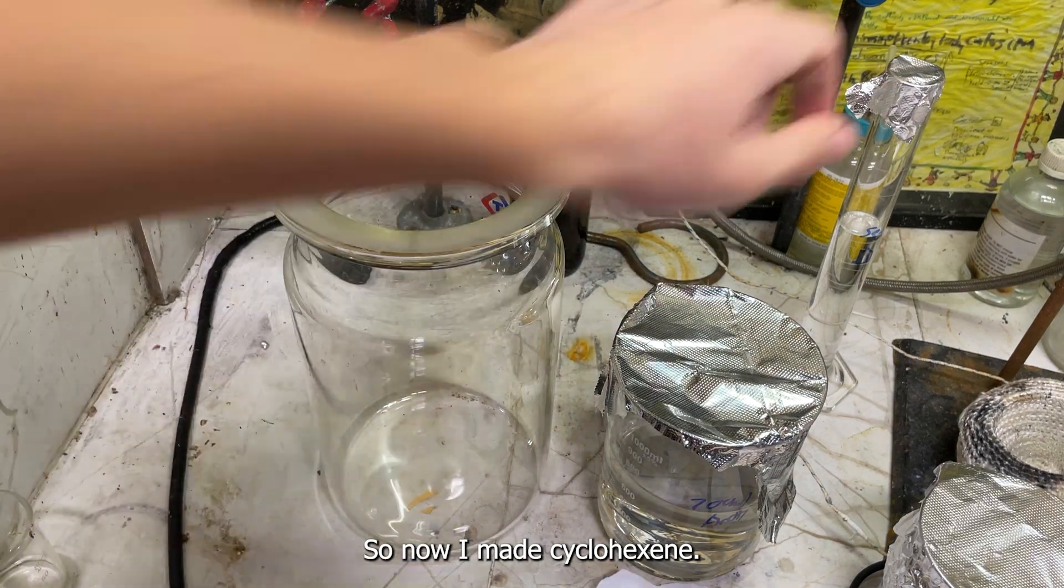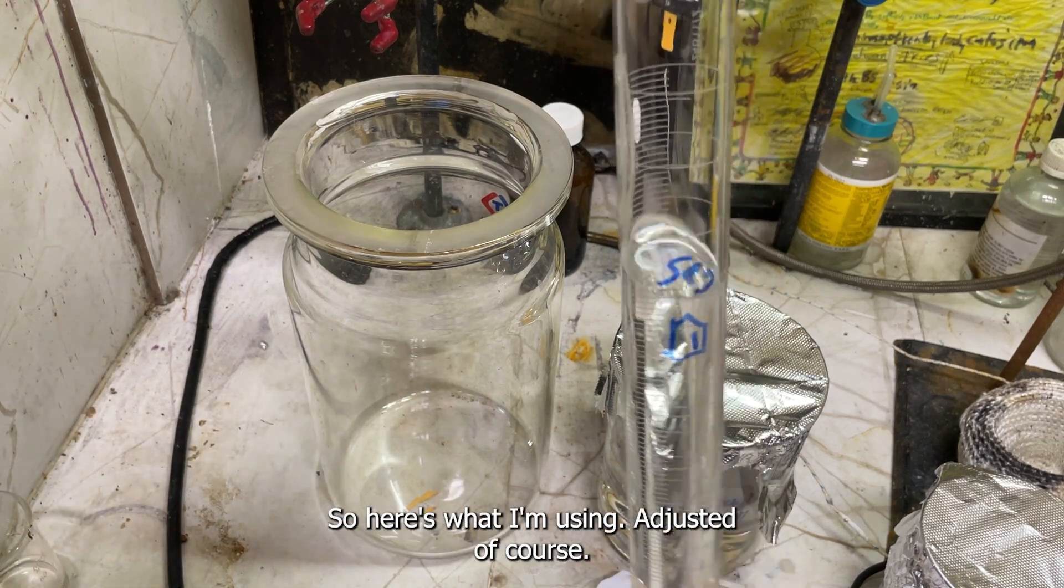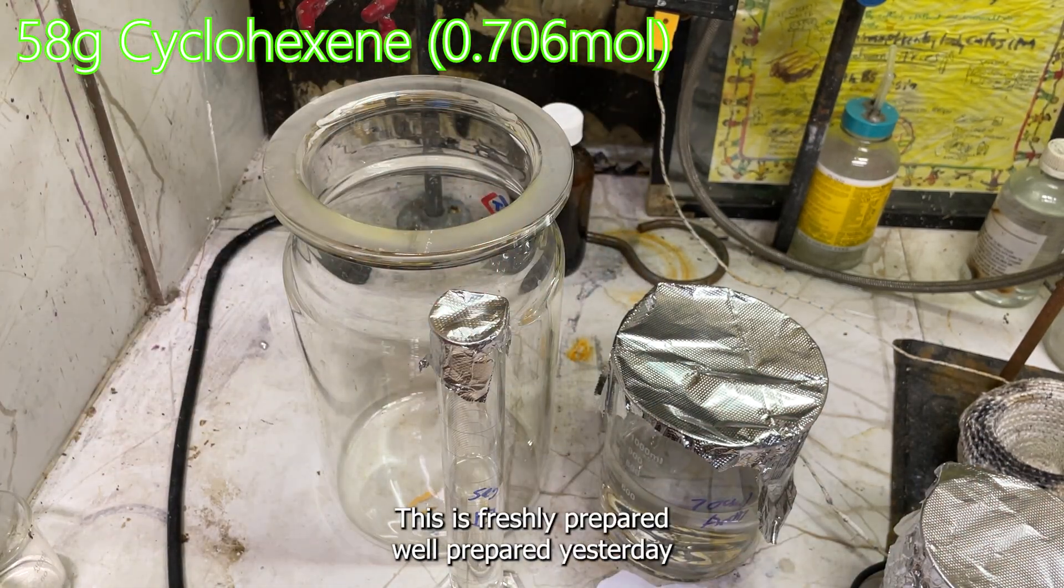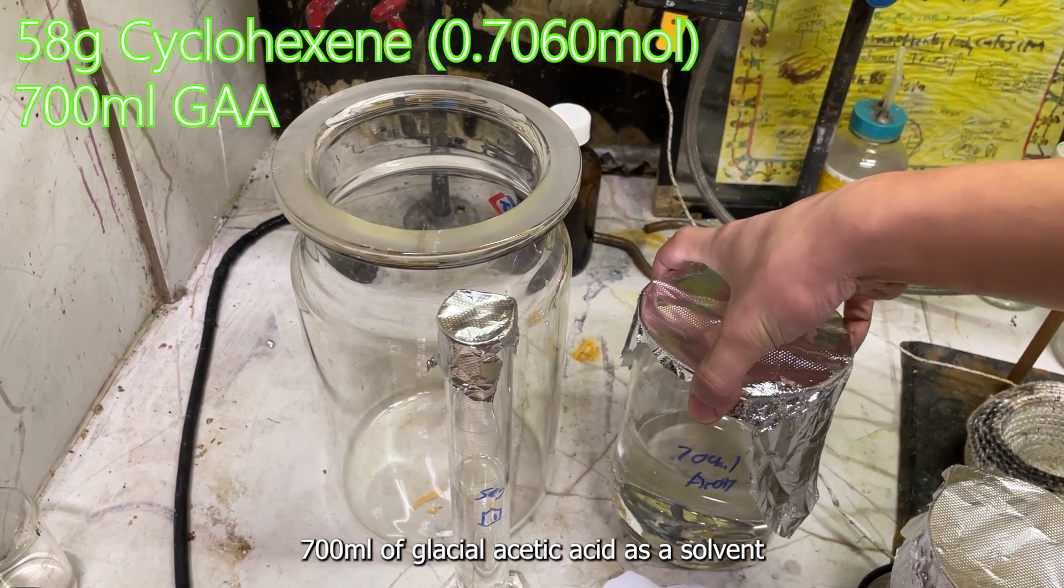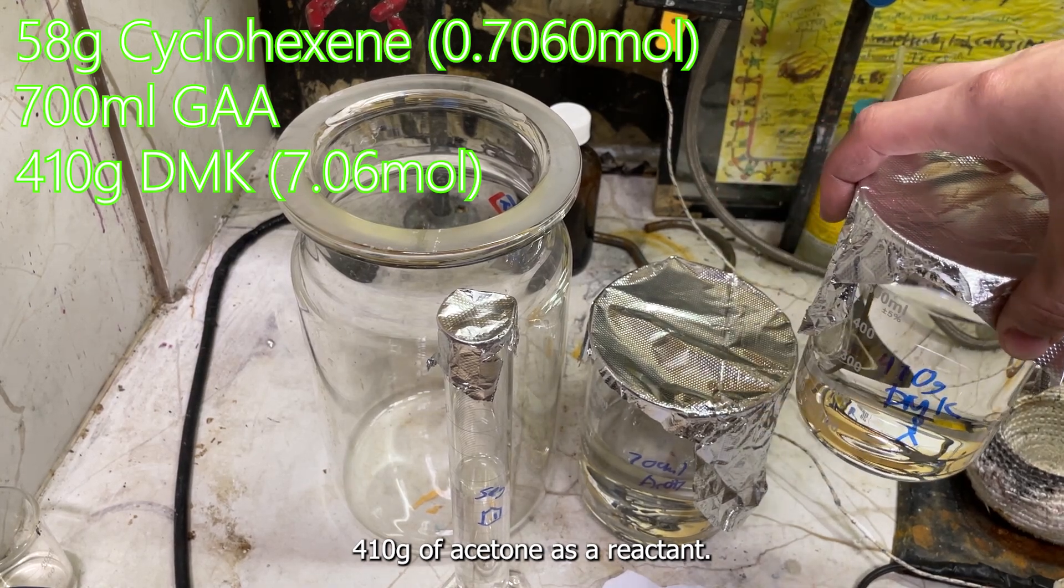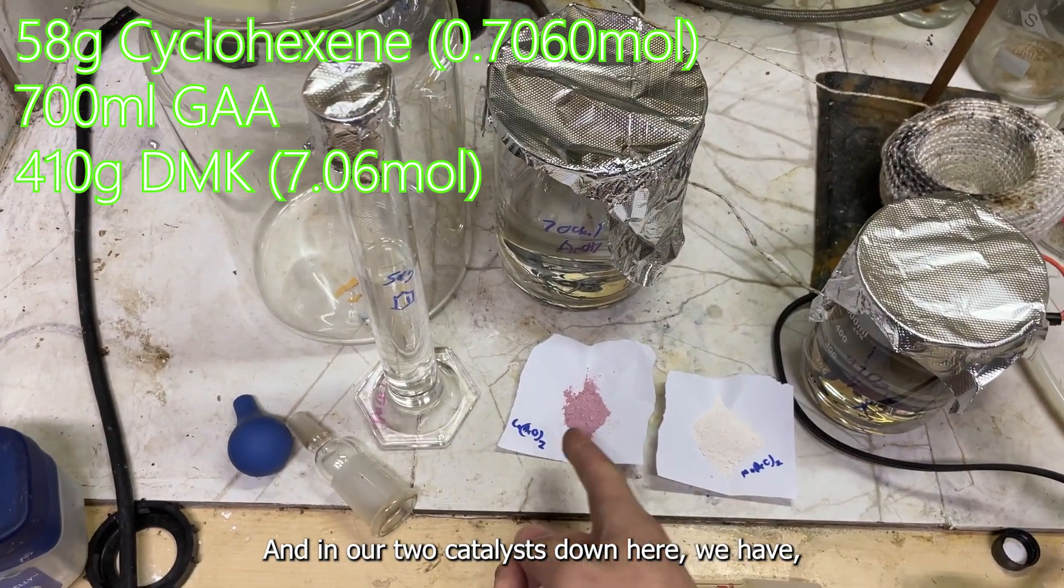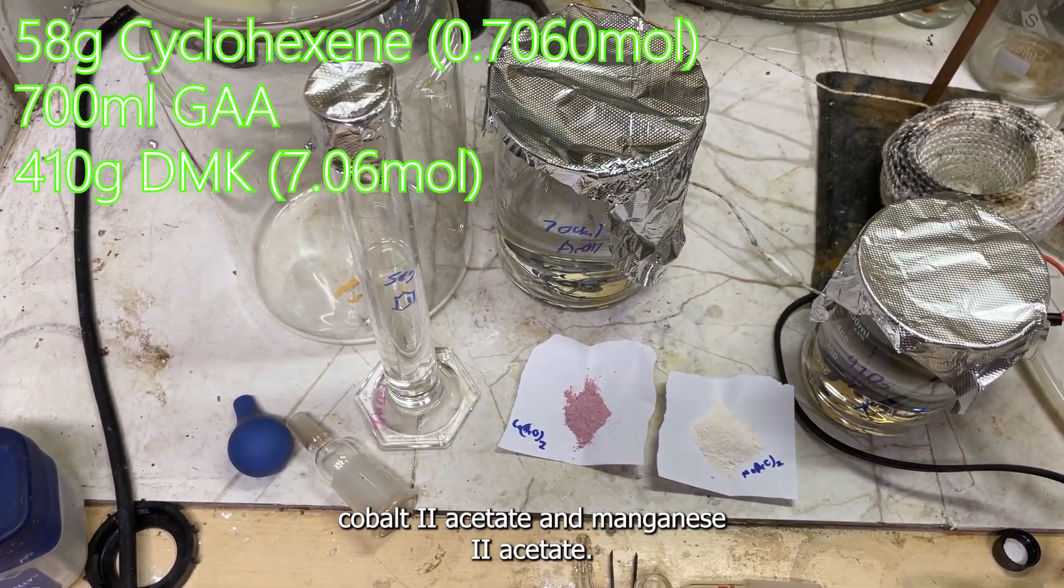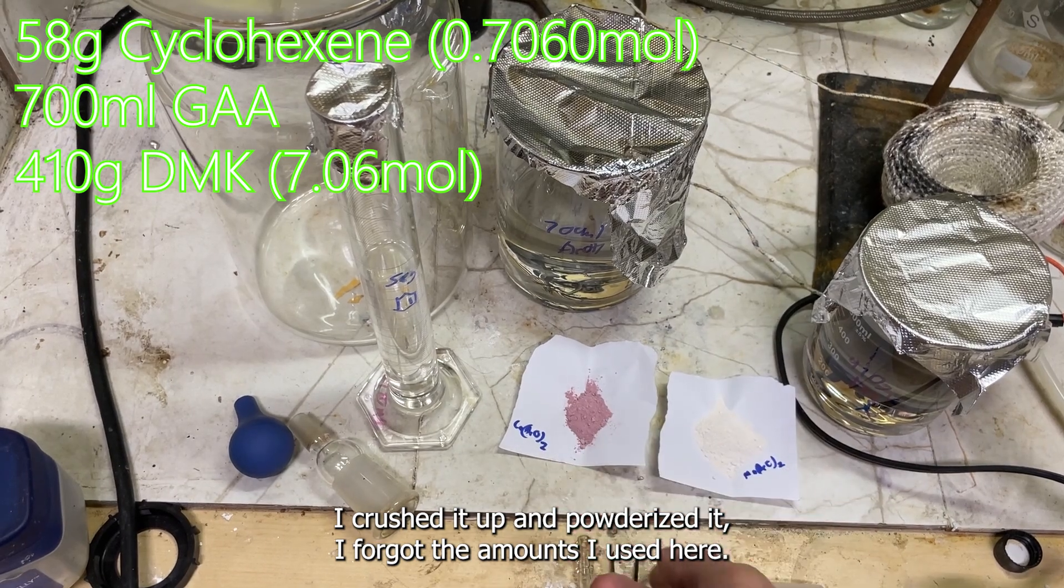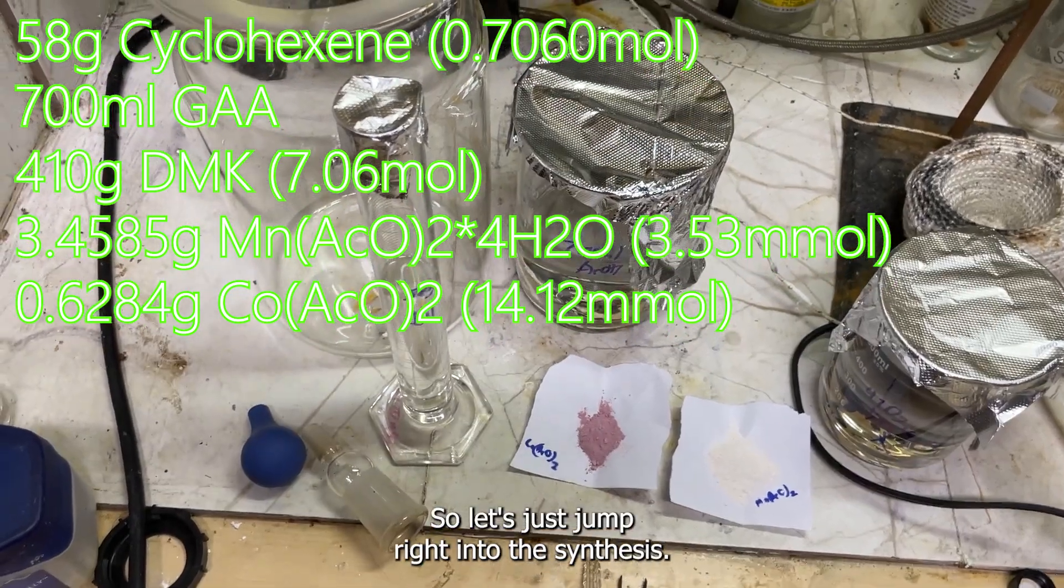Now I made cyclohexanone, this is cyclohexanone I made myself, so I didn't have the amount the patent used. Here's what I'm using, adjusted of course. We're using 58 grams of cyclohexanone, freshly prepared yesterday. 700 milliliters of glacial acetic acid as a solvent, 410 grams of acetone as a reactant. And in our two catalysts down here we have cobalt-2-acetate and manganese-2-acetate crushed up and powderized. I forgot the amounts I used here, so I'll throw them up on the screen right now.